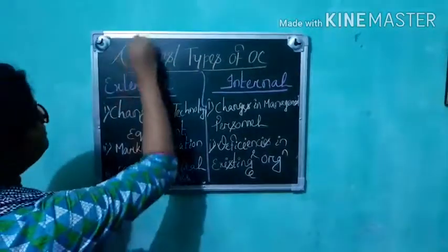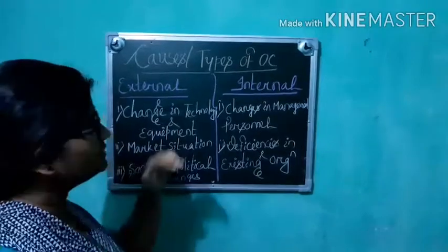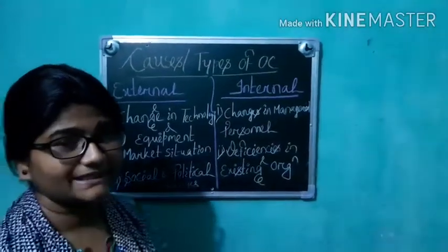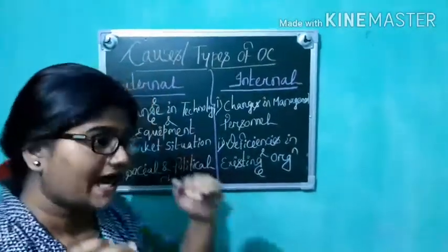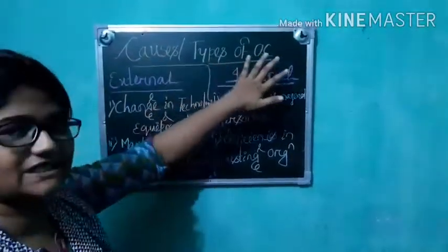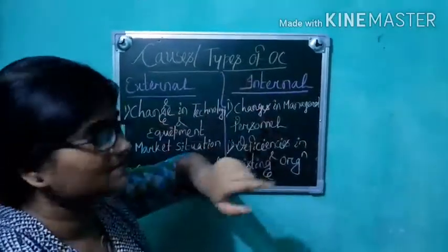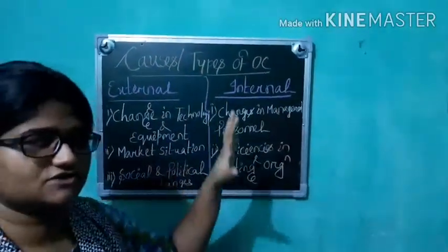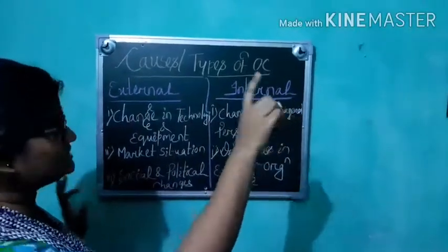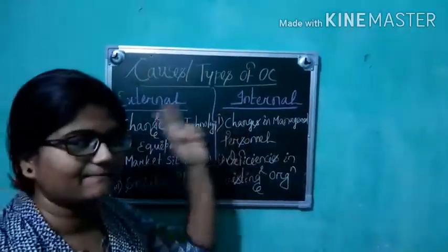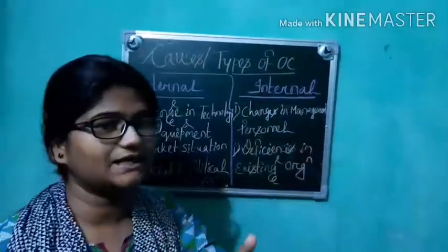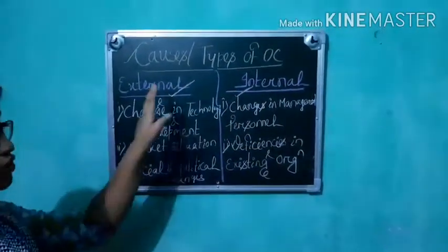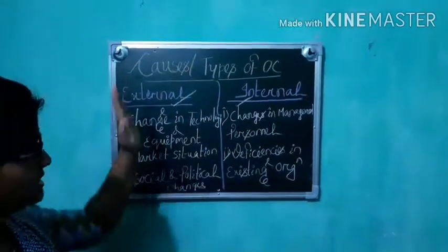Good morning students. In module 5, we are covering the causes and types of organizational change. In the previous video we completed the meaning, definition, and nature of organizational change. Now we come to types of organizational change — causes and types are essentially the same thing. These occur due to two kinds of pressures: external pressure and internal pressure.